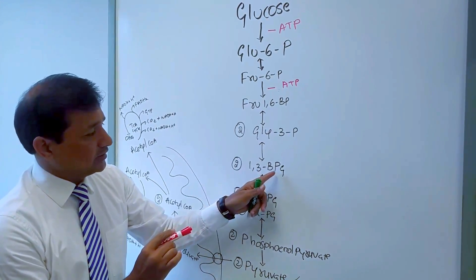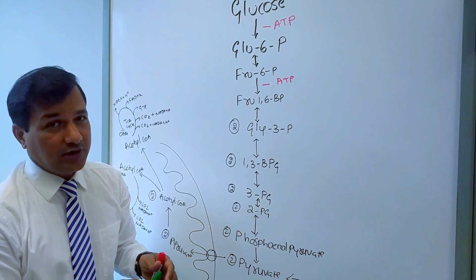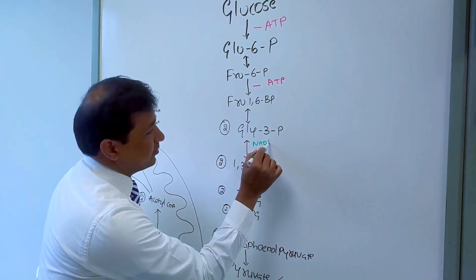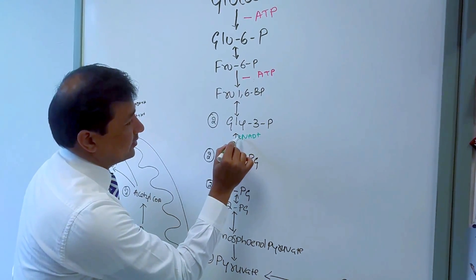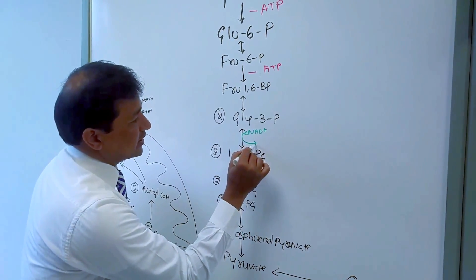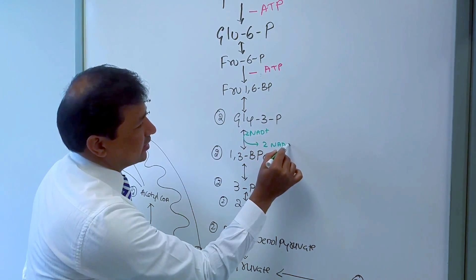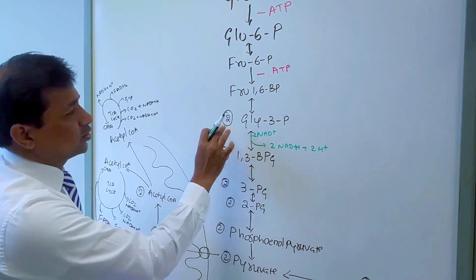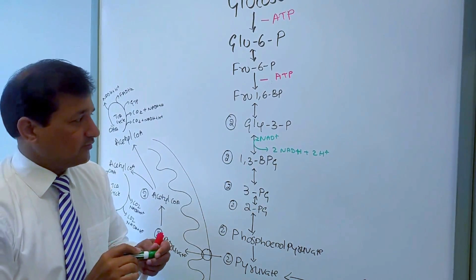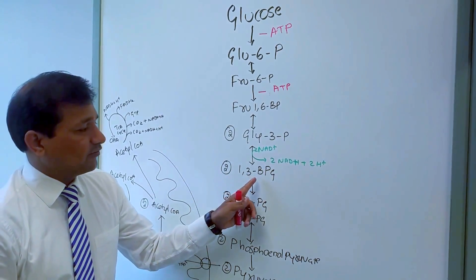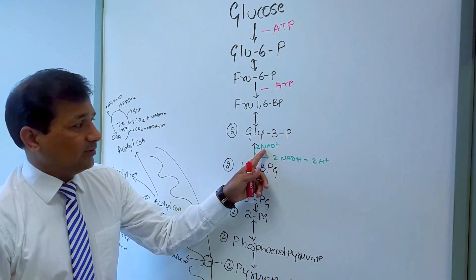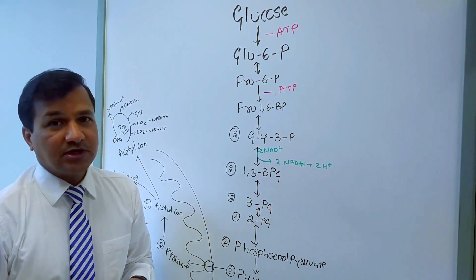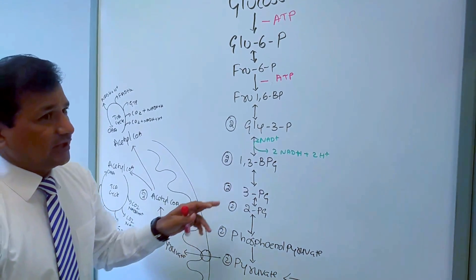In the fourth step, two molecules of glyceraldehyde 3-phosphate are converted to two molecules of 1,3-bisphosphoglycerate. During this step, NAD+ participates — two molecules of NAD+ come in and go out as two molecules of NADH + 2H+, because we are considering two molecules of glyceraldehyde 3-phosphate making two molecules of 1,3-bisphosphoglycerate.